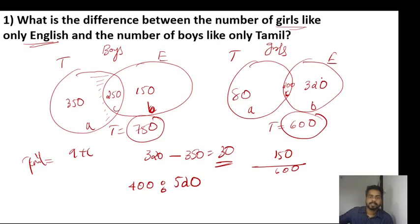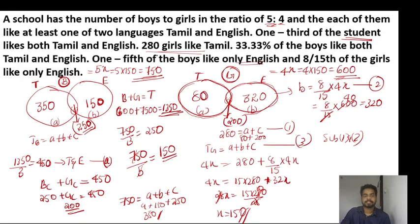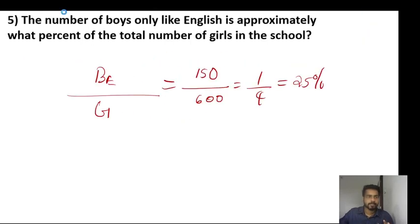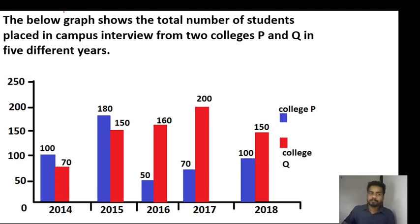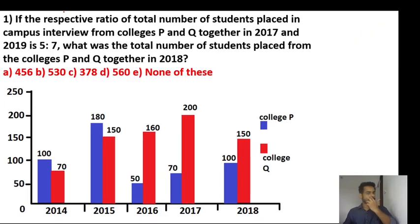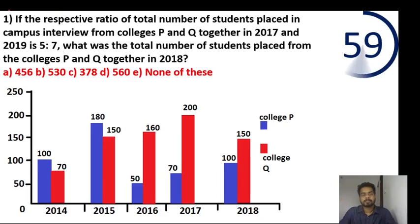So here is the caselet approach. Now there's a new problem — colleges P and Q, campus interview. What is the respective ratio of total number of students placed in campus interview from college P and Q together in 2017 and 2019? That ratio is 5 is to 7.